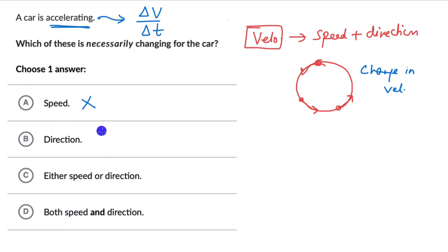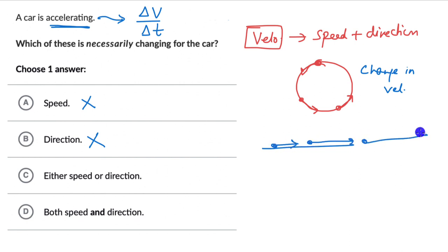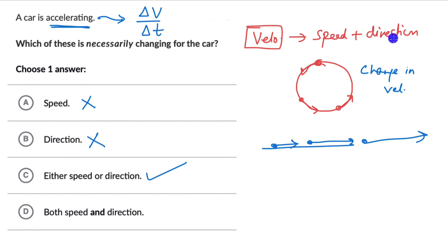By similar logic, option B is wrong too. We can have an object moving in the same direction but with increasing speed — direction is not changing, but speed is, which means velocity is changing, because velocity is both speed and direction. So there will be acceleration. Option C says 'either speed or direction,' which is correct — any one of them can change and there will be a change in velocity, or both can change.